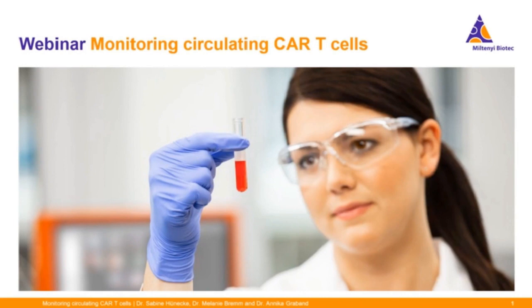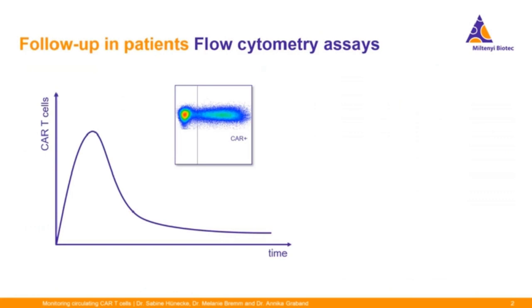A warm welcome also from my side. Today we are taking a closer look at different strategies for CAR detection in regard to the follow-up of patients undergoing CAR T-cell treatment. Flow cytometry is a powerful tool to monitor CAR T-cells in blood samples over time. It can tell you whether your marker of interest is expressed at the protein level and give insight into protein functionality. Moreover, it enables you to track multiple markers on a single cell level, for example for analysis of cell subtype representation.